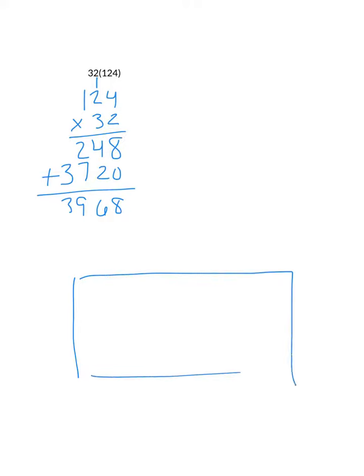All area model is doing is it's organizing each row. So hopefully we recognize exactly what we're multiplying and we don't make a careless error. So you have your 124, which is 100 plus 20 plus 4.